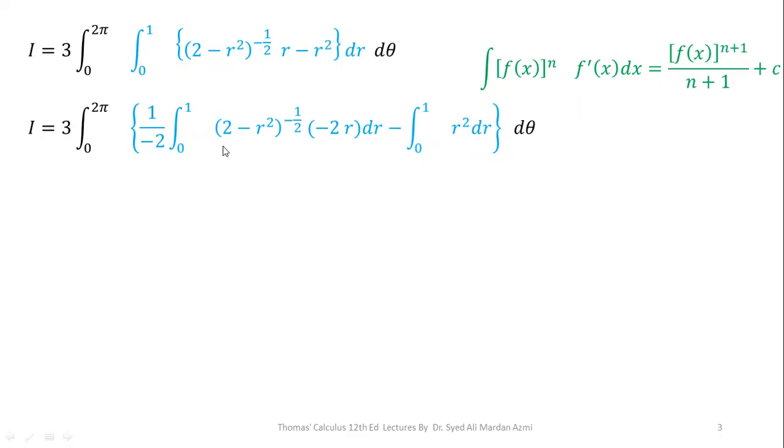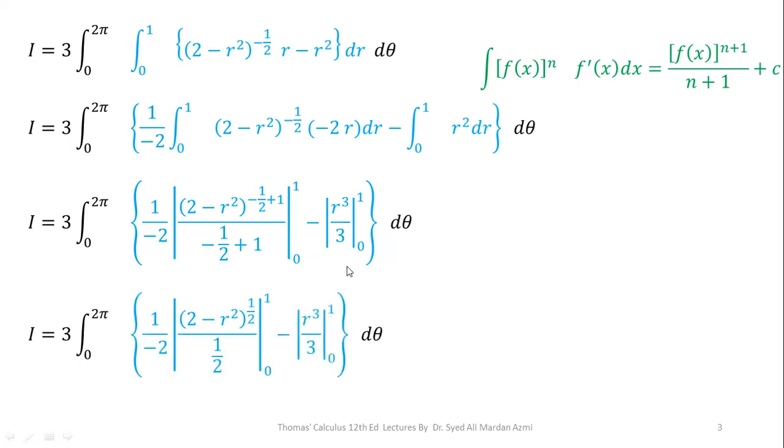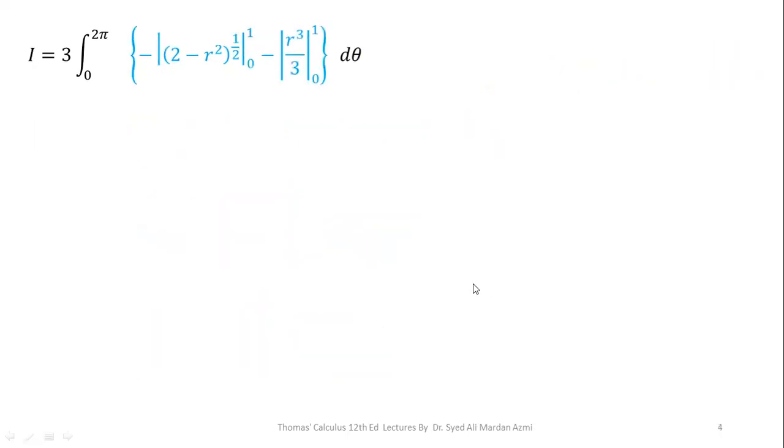So, in the next term, I can apply this formula on the first term and the integration of second term will be r cube over 3. So, applying this formula, power formula on the first term, we have minus 1 by 2 remain as this is 2 minus r square raised to power minus 1 by 2 plus 1 divided by minus 1 by 2 plus 1 minus integration of r square is r cube over 3 for the given limit 0 to 1. Making the simplification minus 1 by 2 plus 1 become 1 by 2. Now, this 1 by 2 and this 1 by 2 will be cancelled out. And we have minus 2 minus r square raised to power 1 by 2 limits from 0 to 1, r cube over 3 for the limit 0 to 1.